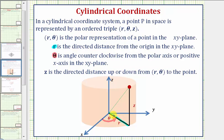And finally, z is the directed distance up or down from r comma theta to the point shown here.